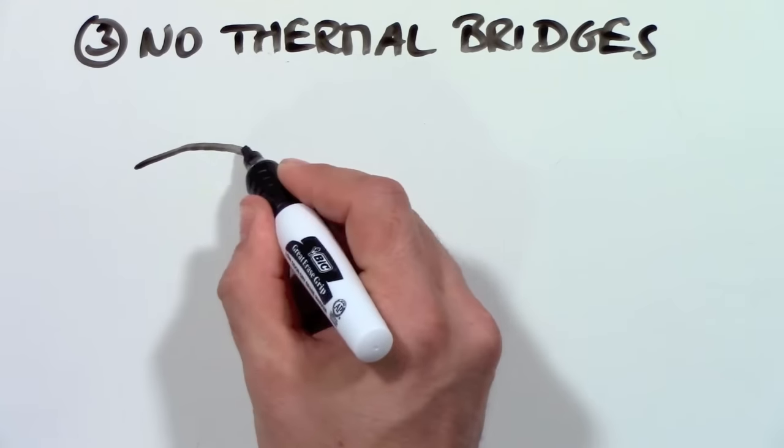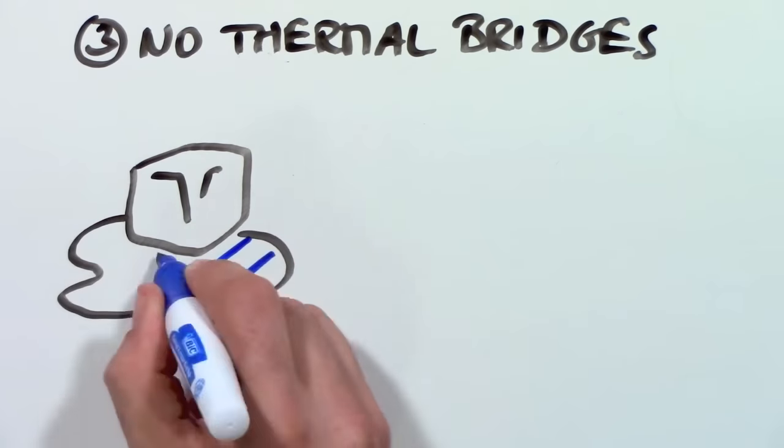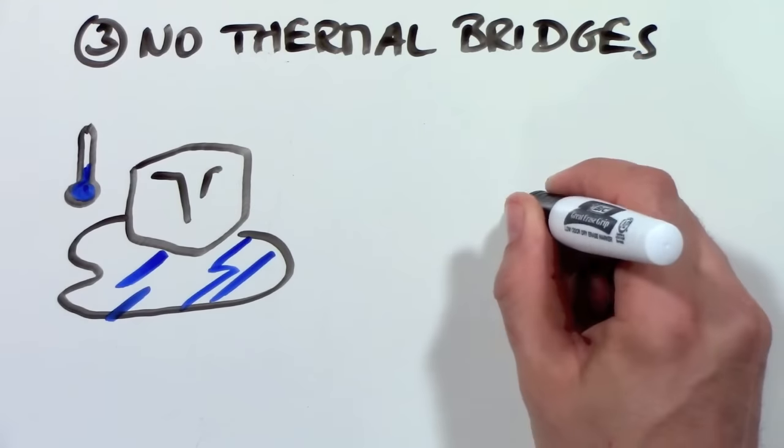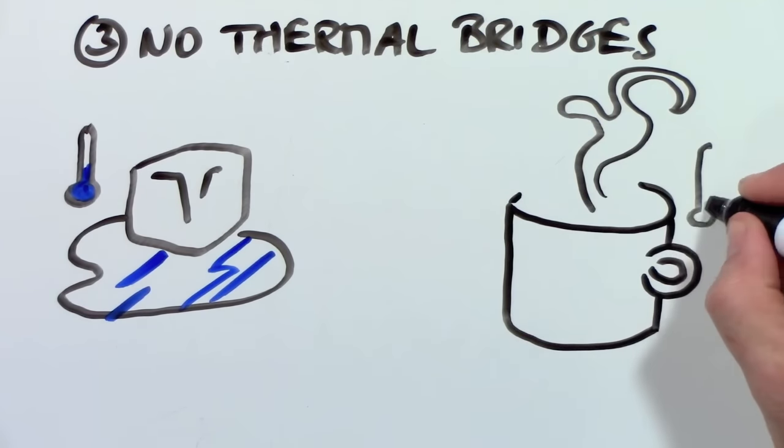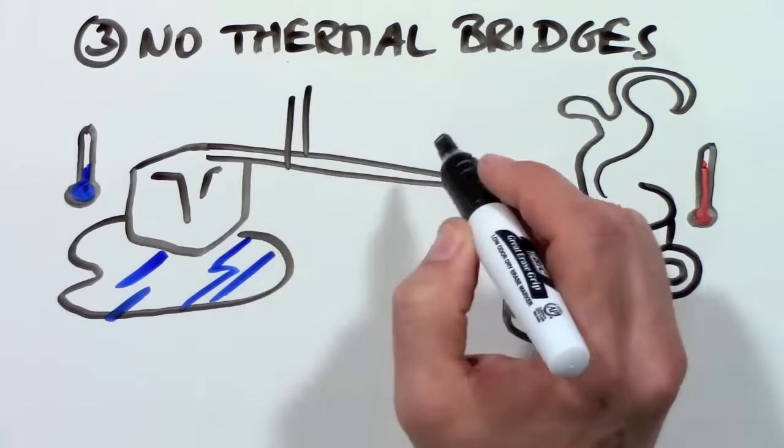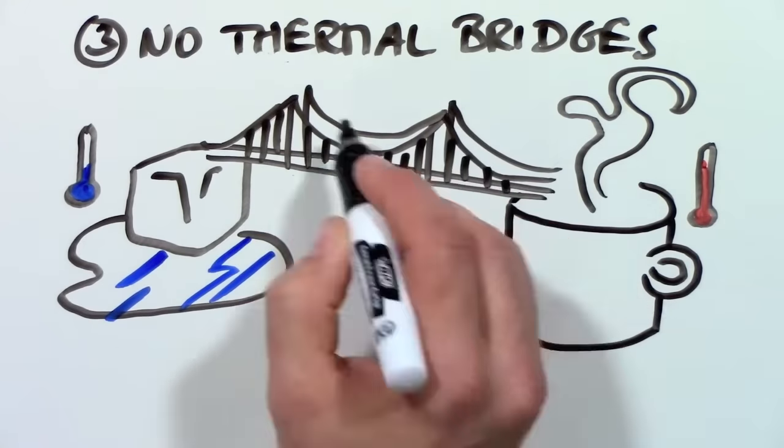3. No thermal bridges. A thermal bridge is like a road for heating energy in which warmth can travel right through your walls. As a matter of fact, most of our houses have thermal highways in our walls where heat can easily travel to the outside.